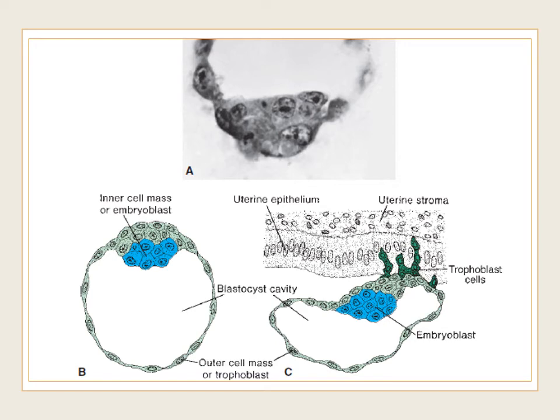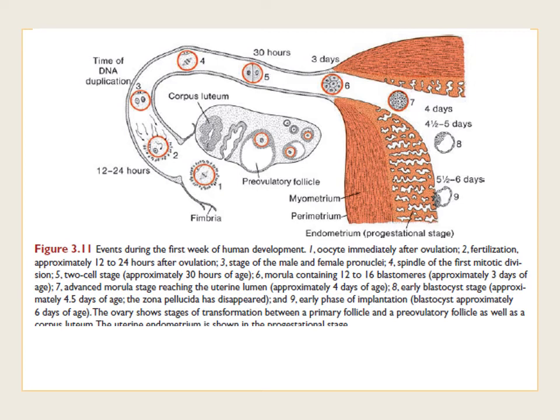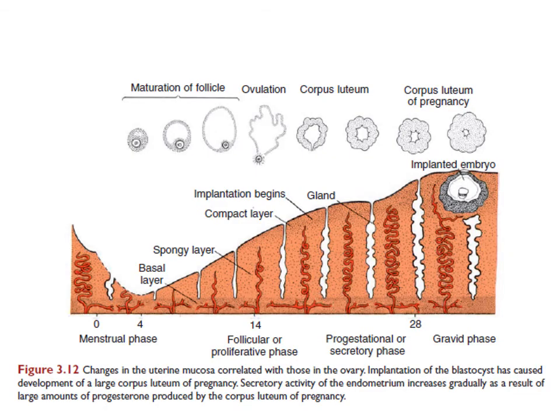The embryo will implant itself in the endometrium along the anterior and posterior wall of the body of the uterus. This figure shows the different events during the first week of human development. The wall of the uterus consists of three layers: the endometrium, which is the mucosal lining inside the uterus; the myometrium, which is the thick layer of smooth muscle; and the perimetrium, which is the peritoneal covering lining the outside wall of the uterus.